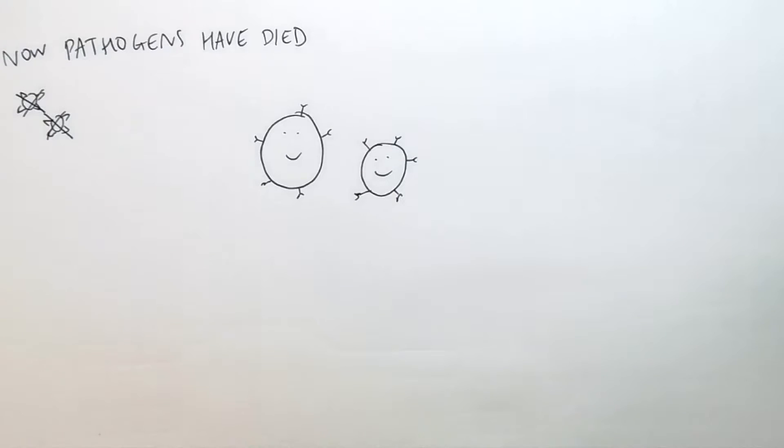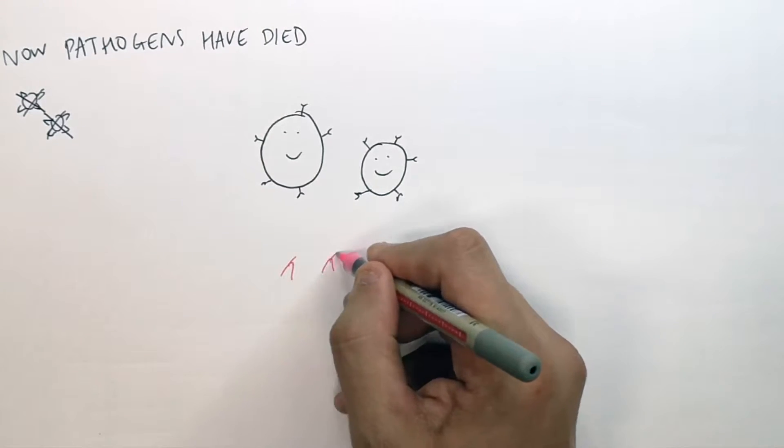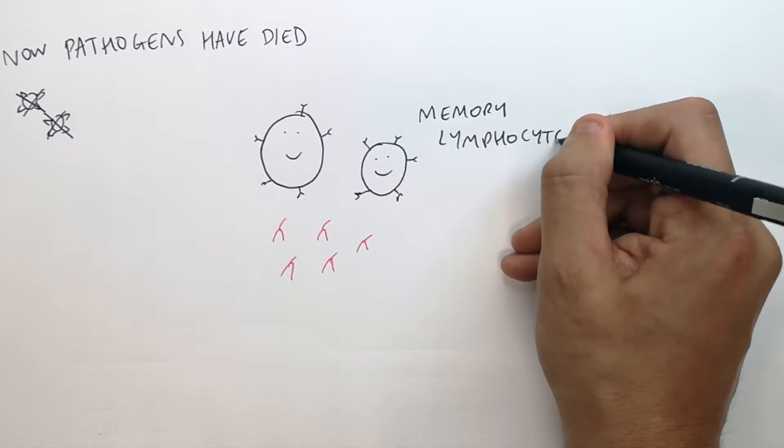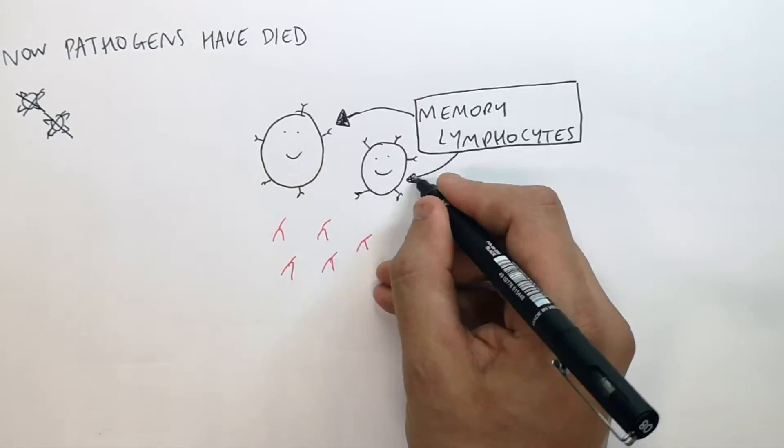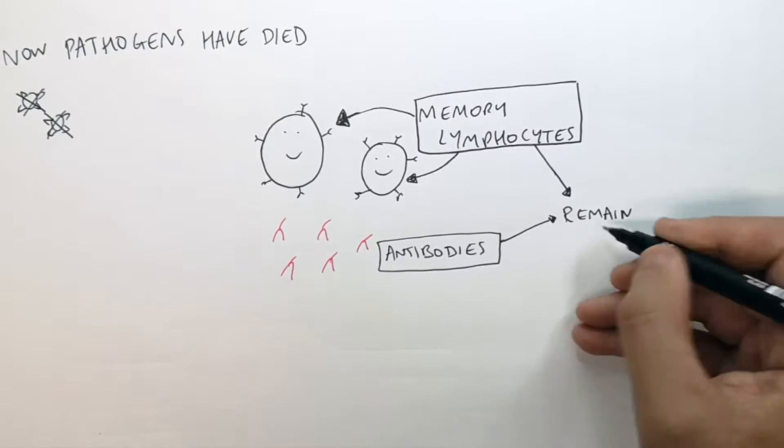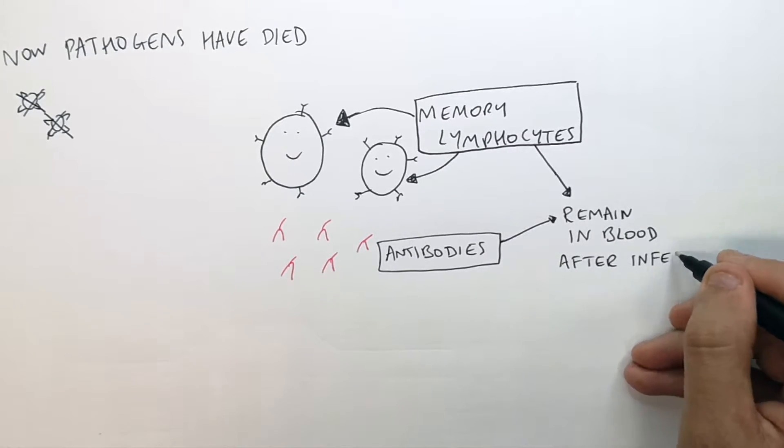After the infection and the pathogens have died, the memory lymphocytes and antibodies remain in the blood. So the memory lymphocytes remain in the blood after the infection and antibodies also both remain in the blood after the infection.